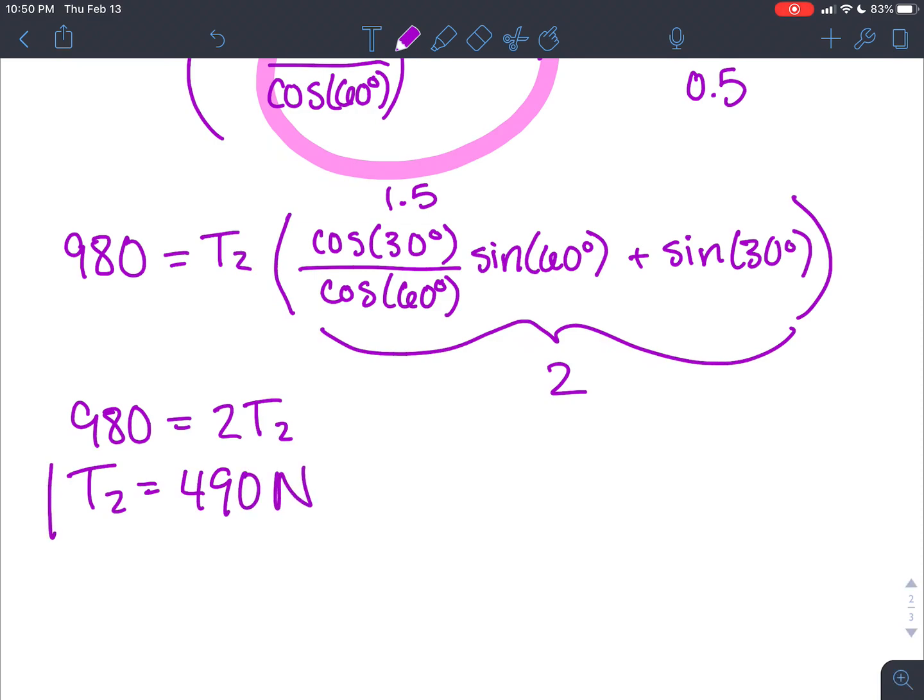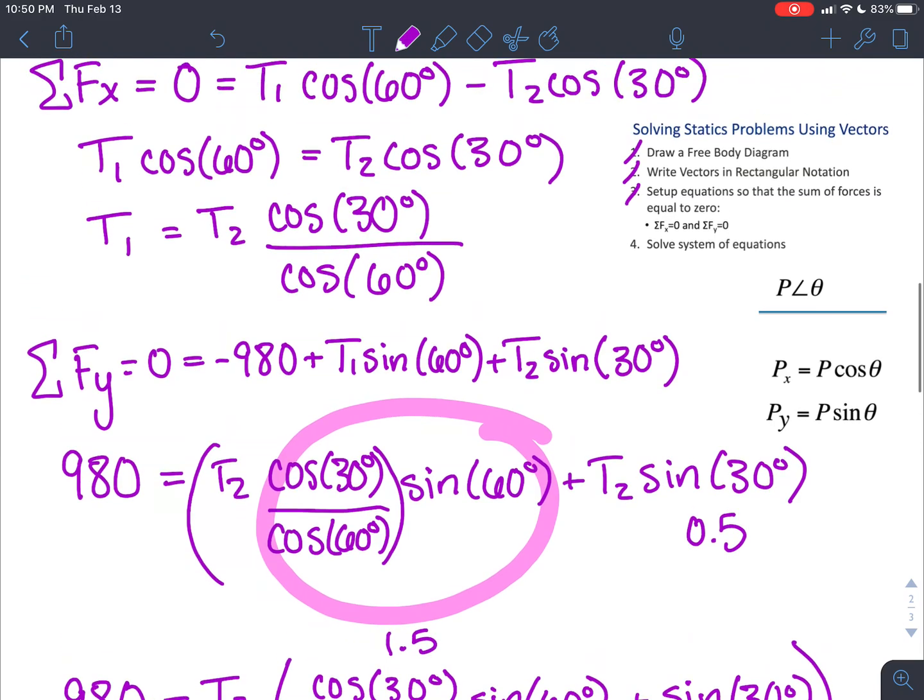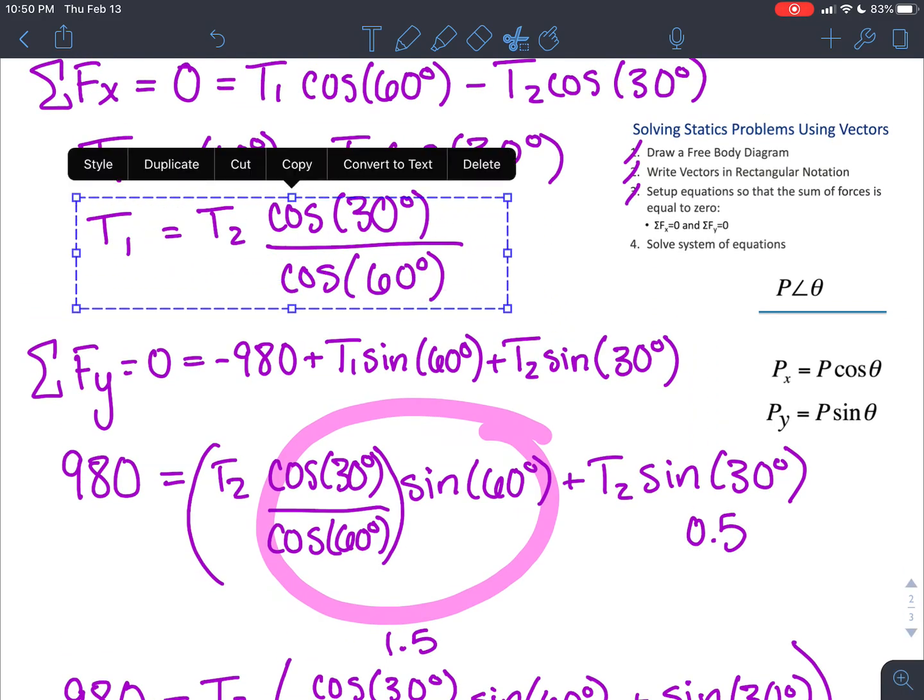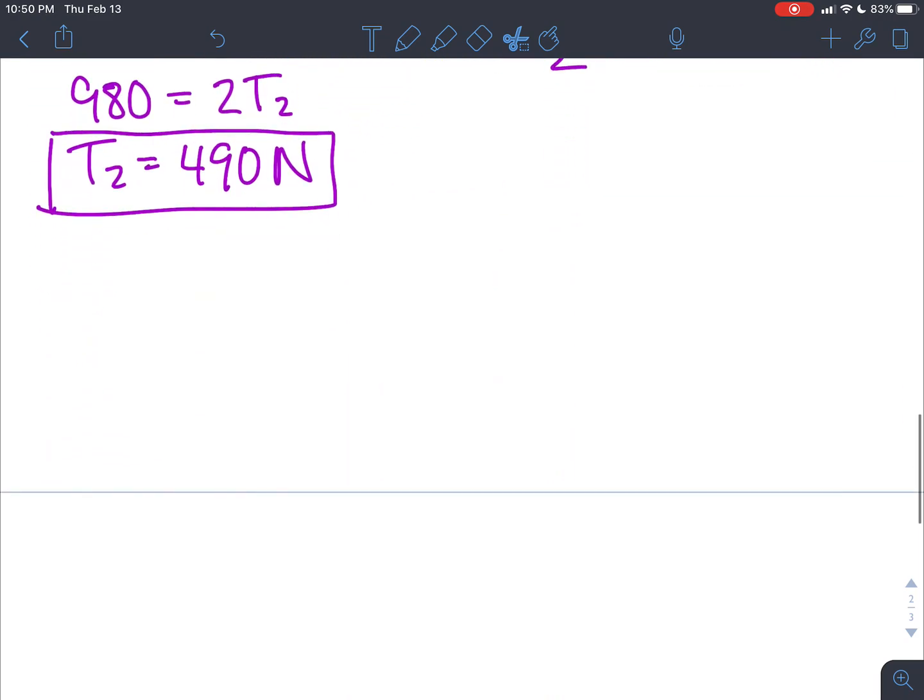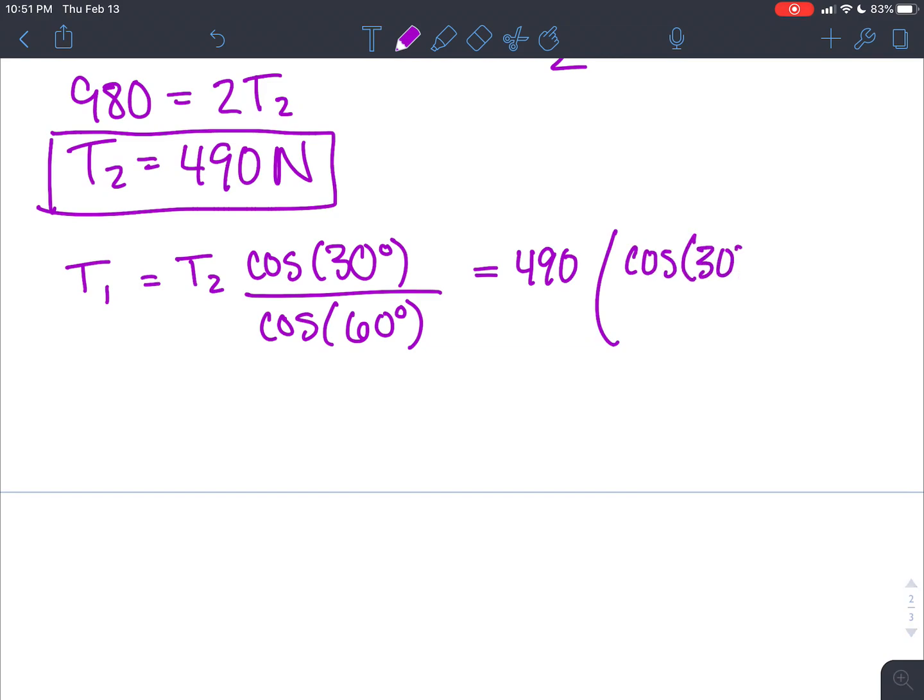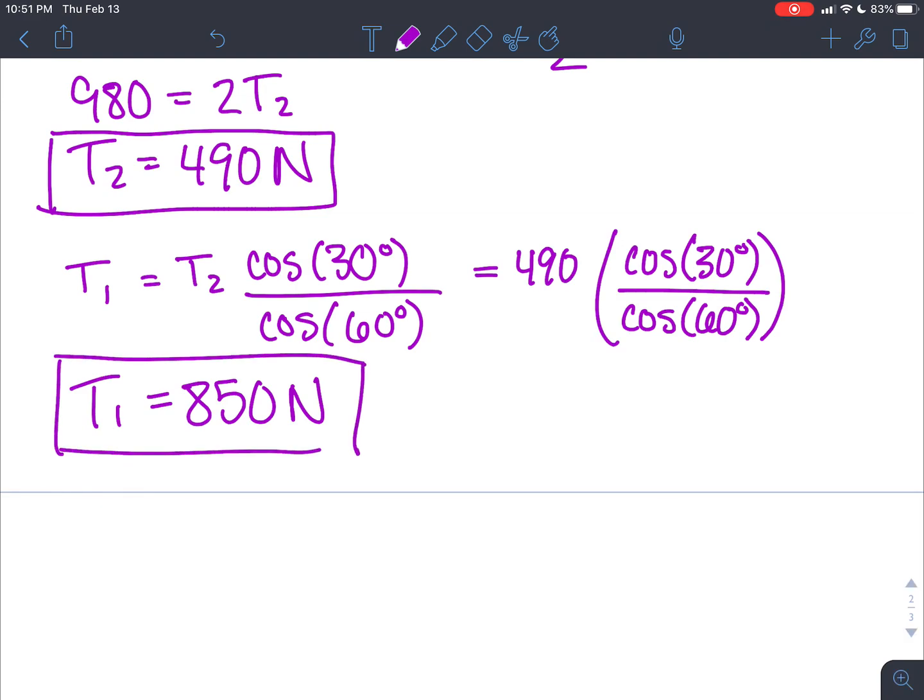This is where we remember to add back in our unit. Now that we have a value for T2, we can come back up here and grab our equation for T1 and put that back in. If we plug in our value for T2, that gives us a value of 850 for T1. Now we know the value of all of the forces that were in our free body diagram.